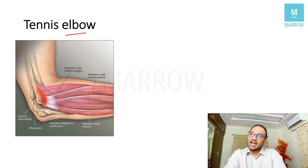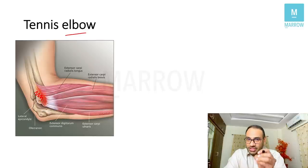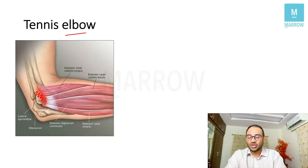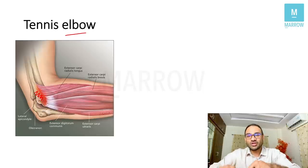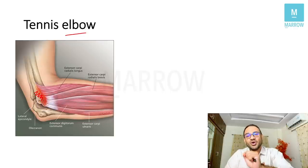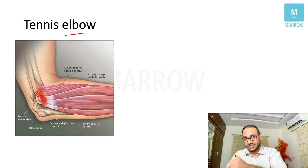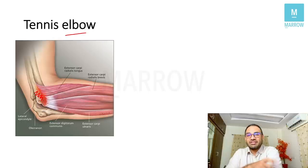Tennis elbow is lateral epicondylitis — inflammation of the muscles originating at the lateral epicondyle due to repetitive trauma. People who repeatedly use their wrist extensors are affected: those playing backhand tennis, rinsing clothes, motorbike riders, carpenters who hammer all day. The common extensor origin of the wrist muscles becomes inflamed, particularly extensor carpi radialis brevis more than extensor carpi radialis longus. There will be pain at the lateral epicondyle, particularly on extension of the wrist.